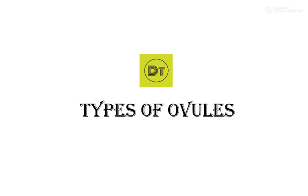Hello students, welcome back to my channel. In today's video we are going to learn about different types of ovules found in angiosperms. In angiosperms there are basically six different types of ovules. So let's begin.